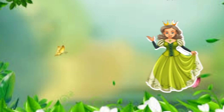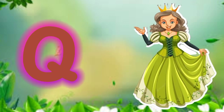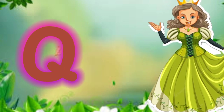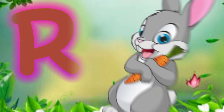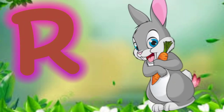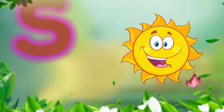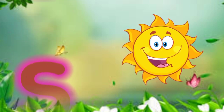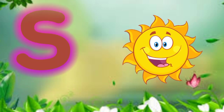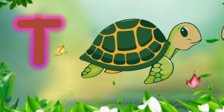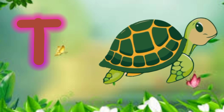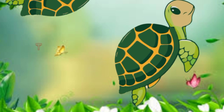Q is for queen, k-k-queen. R is for rabbit, r-r-rabbit. S is for sun, s-s-sun. T is for toad, t-t-toad.